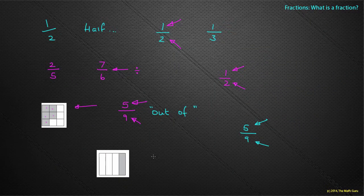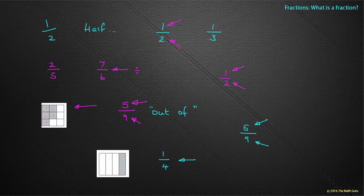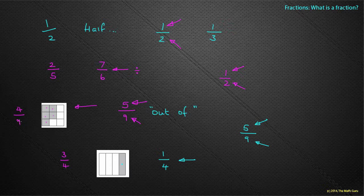Let's look at another example — a totally different shape. How many pieces have I got altogether? I've got one, two, three, four pieces altogether. But how many pieces are shaded? Just one. So I could say I have one shaded piece out of four — that's a fraction: one out of four. What about the unshaded pieces? Well, three of them aren't shaded out of four. And going back to the earlier example, four aren't shaded out of the nine — so we've got four out of nine.